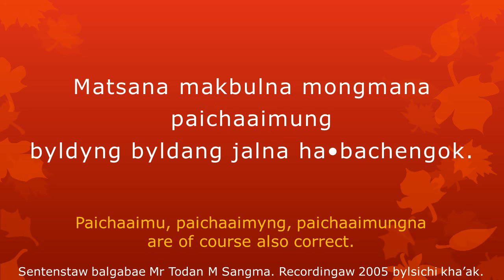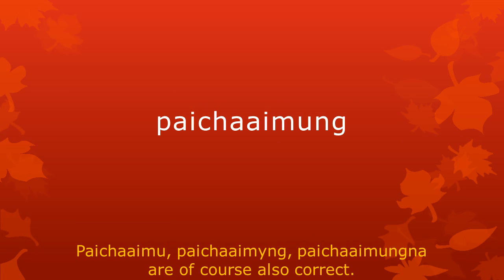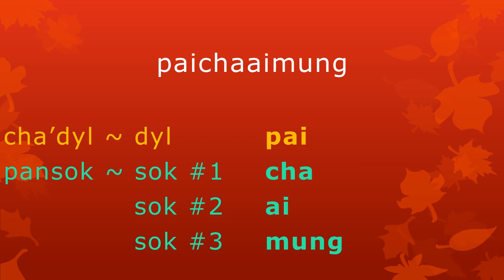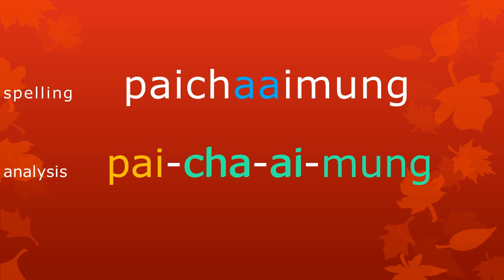Here we see a sentence. Let's read it. Now focus on the spelling of the word Baitaimung. You can see that it is written with two letters A next to each other. Why is that? Well, we can find out by asking: what are the meaningful parts in this word? Can you find them? Try it first.